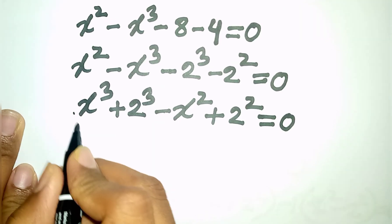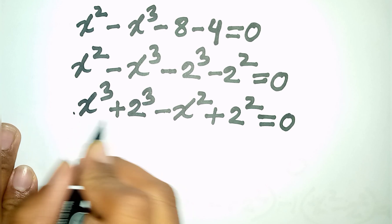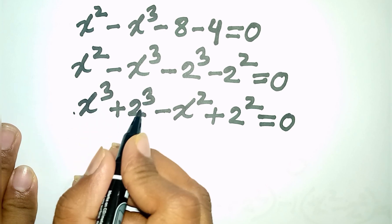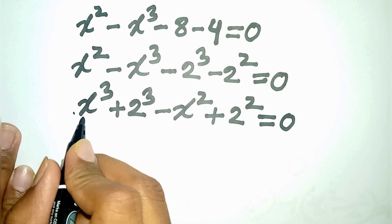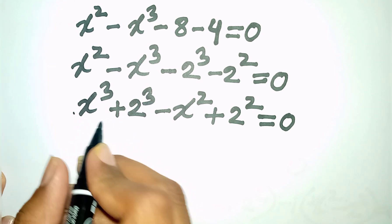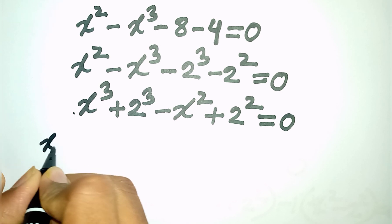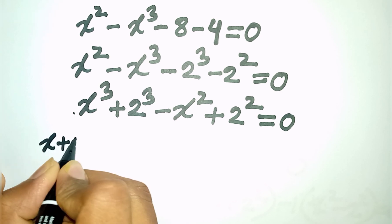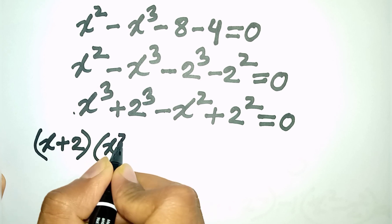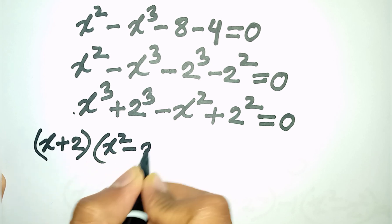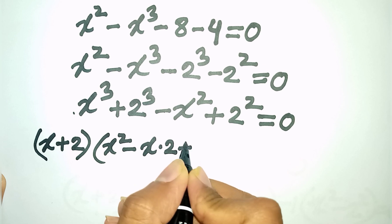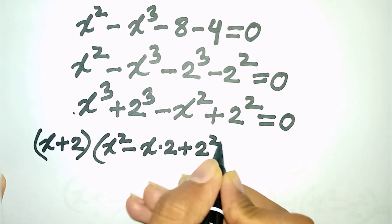Now we can write here. We apply the formula for a³ + b³, where a = x and b = 2. According to the formula, we can write: (x + 2)(x² - x·2 + 2²).